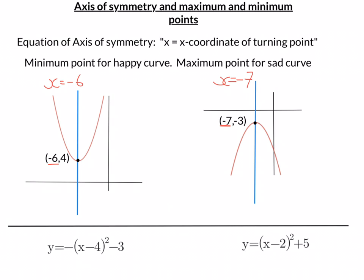Now, whether they're a minimum point or a maximum point: for a happy curve, the turning point is a minimum. It's the lowest point of that curve, and it's a maximum for a sad curve, because it's the highest point it goes to.